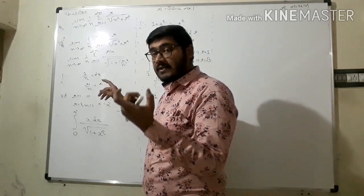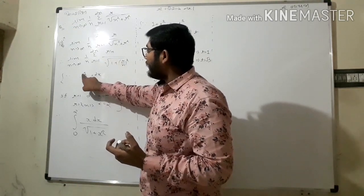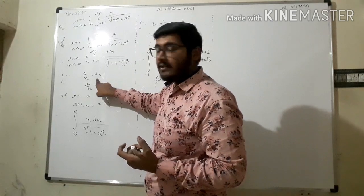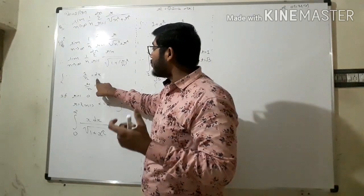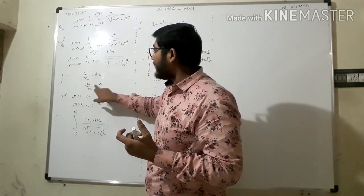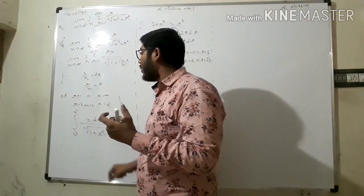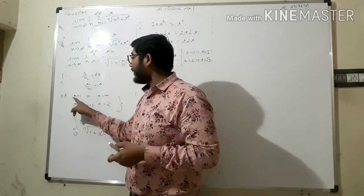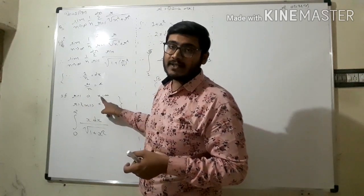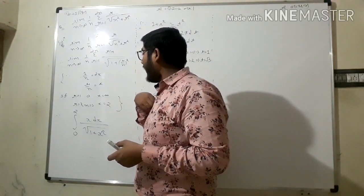I am taking one upon n equal to dx, and r upon n equal to x. So if I put r equal to one, then I get x equal to one upon n, which approaches zero as n tends to infinity.